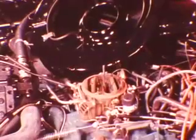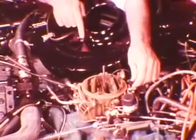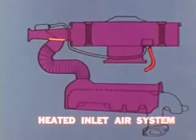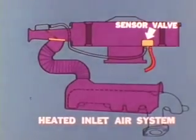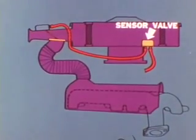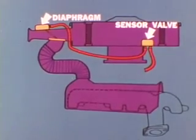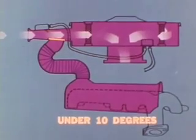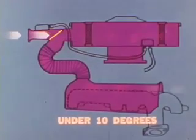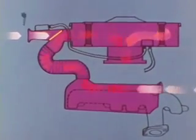In the heated inlet air system, manifold vacuum is routed from a connection at the base of the carburetor through a hose to the temperature sensor valve in the air cleaner housing. A hose from the valve leads to a spring-loaded vacuum diaphragm on top of the air inlet snorkel. When underhood air temperature is under 10 degrees above zero, diaphragm action opens the air inlet from the manifold heat stove, blocking the snorkel entrance so all inlet air flows through the stove.